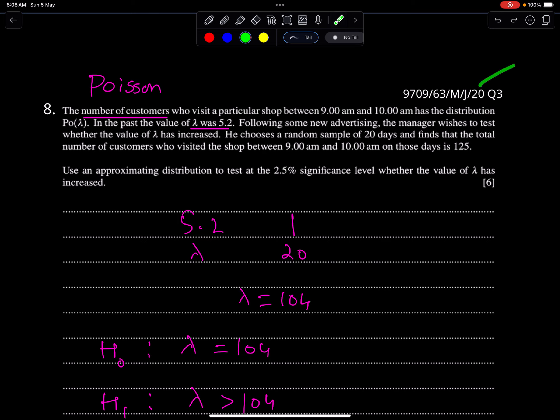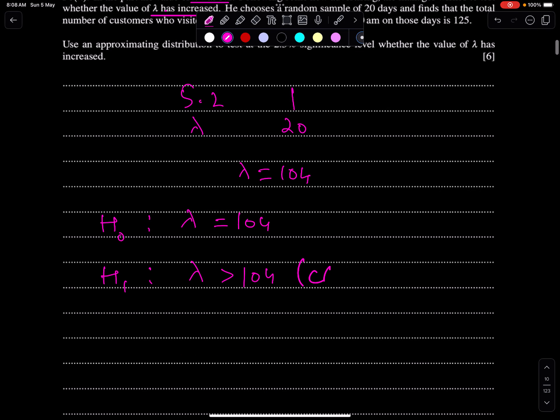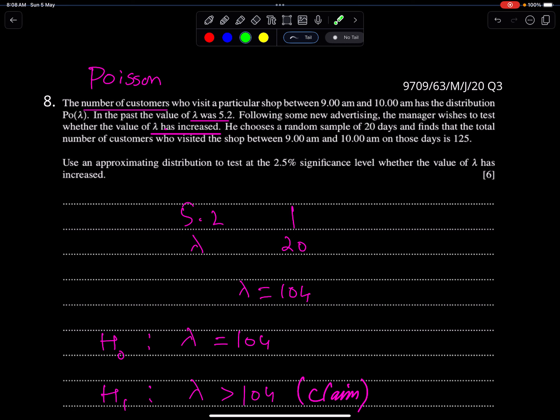Another question of Poisson, June 20, paper 63, question 3. The number of customers who visit a particular shop between 9am and 10am has Poisson distribution. In the past, the value of lambda was 5.2. Following some new advertising, the manager wishes to test whether the lambda has increased. This is the claim. He chooses a random sample of 20 days, so 5.2 is for 1 and for 20 the lambda is 104. He finds the total number of customers is 125 - this is the test value. When lambda is greater than 15, we always use normal approximation, so this question will be solved by normal approximation.